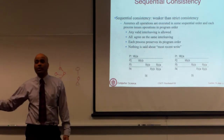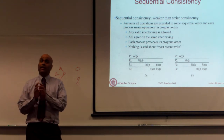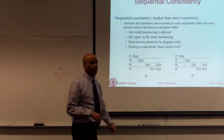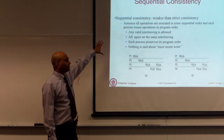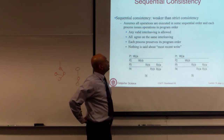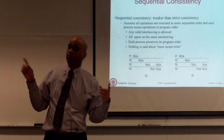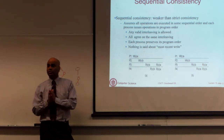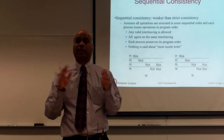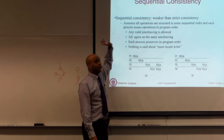Because strict consistency is hard to achieve, there are weaker forms. Sequential consistency is weaker than strict consistency. Its definition: all operations are executed in some sequential order and each process issues operations in program order. This is saying all writes across all sites are ordered — just as in totally ordered multicast — but within each process program order is preserved. Any valid interleaving is allowed, all processes agree on that interleaving, but each process must preserve program order.